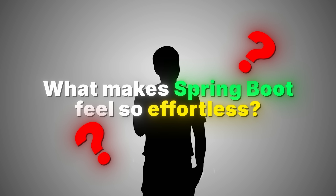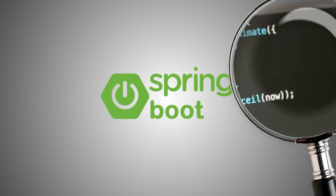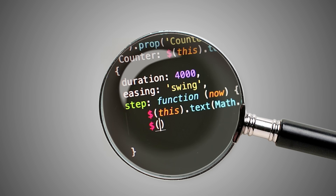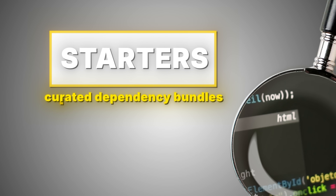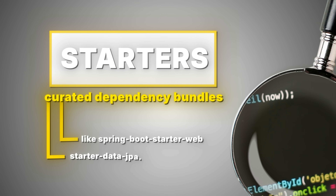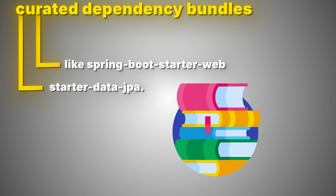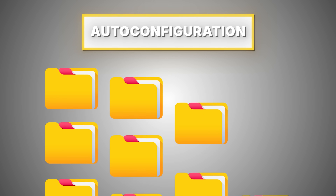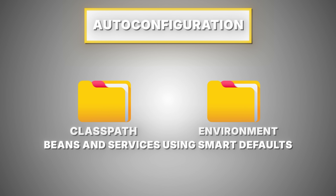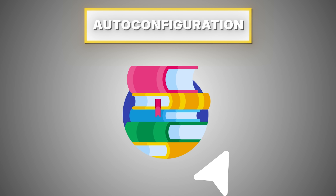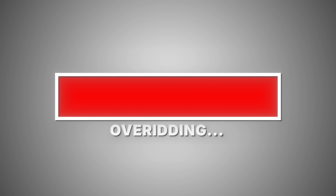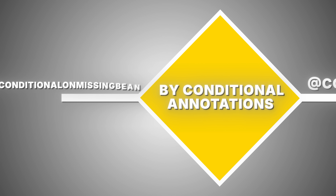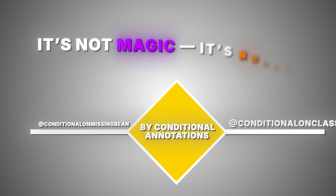What makes Spring Boot feel so effortless? Underneath the simplicity is a sophisticated engine of conventions. At its heart are starters — curated dependency bundles like spring-boot-starter-web or starter-data-jpa — that bring in all the right libraries and configurations so developers don't have to hunt them down. Then comes auto-configuration: Boot inspects your class path and environment and automatically wires up beans and services using smart defaults. If a certain library is present, it activates what you likely need; if you override it, Boot steps aside. This behavior is driven by conditional annotations like @ConditionalOnClass and @ConditionalOnMissingBean. It's not magic — it's rules.